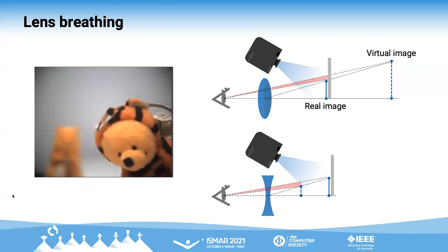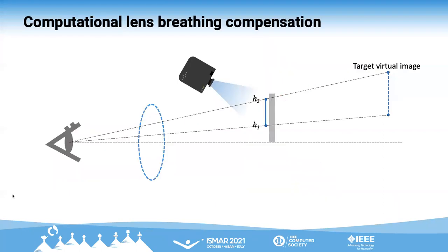This unintended transforming effect is called lens breathing. The previous works applying ETLs to AR and VR headsets faced the same problem, and they manually adjusted the displayed image to solve this problem.